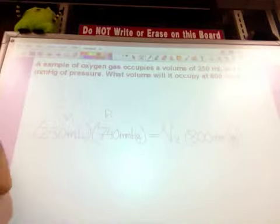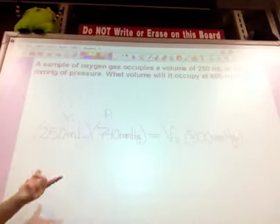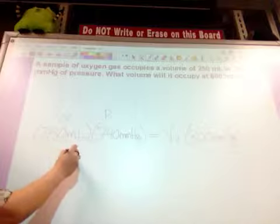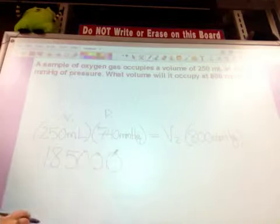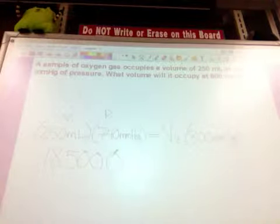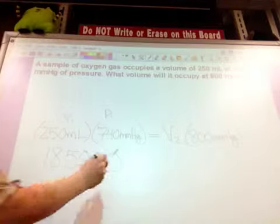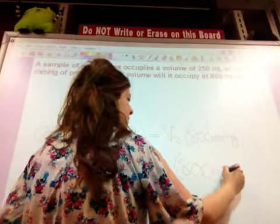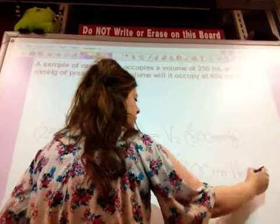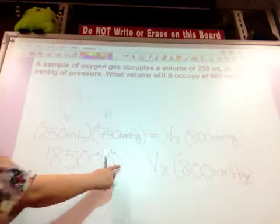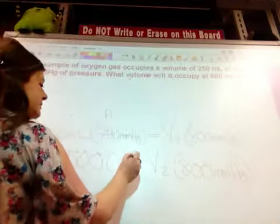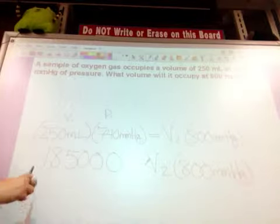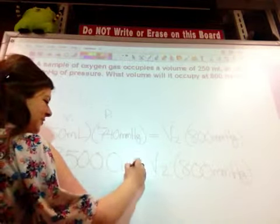So what I would do to get V2 by itself, I'm going to have to multiply these two together first. When I do that, I should get 185,000. And then that's going to leave me with equals V2 times 800 millimeters of mercury. I forgot my units here. So let's add those in. So this unit would be just a milliliter times millimeters of mercury.